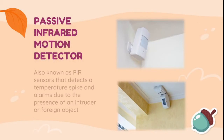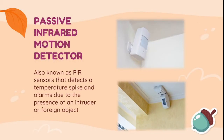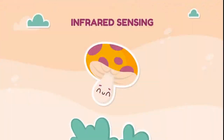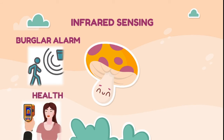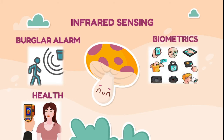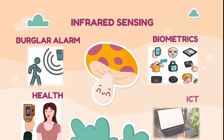A passive infrared motion detector, also known as a PIR sensor, detects a temperature spike and triggers an alarm due to the presence of an intruder or foreign object. Infrared sensing is used in burglar alarm systems for security purposes and to monitor body temperature through a thermal scanner. It is also used to determine an individual's identification through biometrics, and for sending commands in laptops and mobile phones through a command sensor.